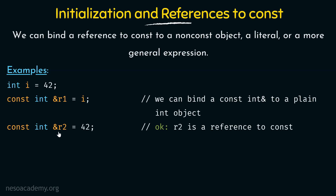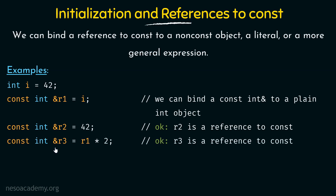Next, I am declaring another reference to const called r2 of type integer and assigning it the literal value 42. If this were a normal reference, this would throw an error because normal references can only be bound to existing objects, not to literals. But in case of references to const, we can also bind it to literals. Then I define r3, a reference to const of type integer, binding it to the expression r1 * 2. We see that we are able to bind it even to general expressions. These things are possible for references to const but not for ordinary references.